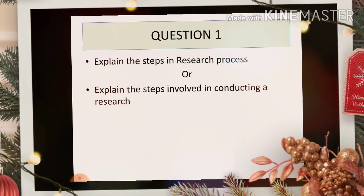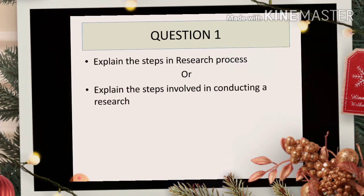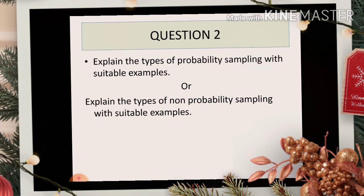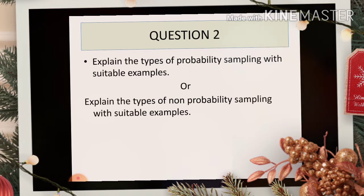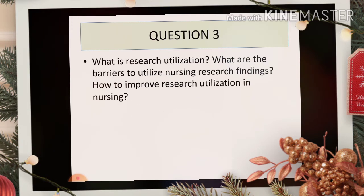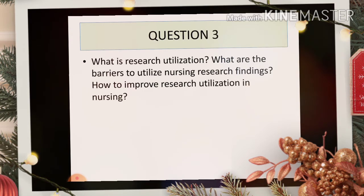Question number one: explain the steps of research process, or explain the steps involved in conducting a research. Question number two: explain the types of probability sampling with suitable examples, or explain the types of non-probability sampling with suitable examples. Question number three: what is research utilization, what are the barriers to utilize nursing research findings, and how to improve research utilization in nursing.